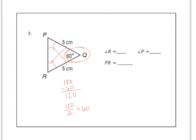So look what happens. Each of the angles is actually 60 degrees. Angle R is 60, angle P is 60, angle Q is also 60. If all three angles are the same, then all three sides will be the same. And so PR would have to be 5 centimeters, just like the other two sides.